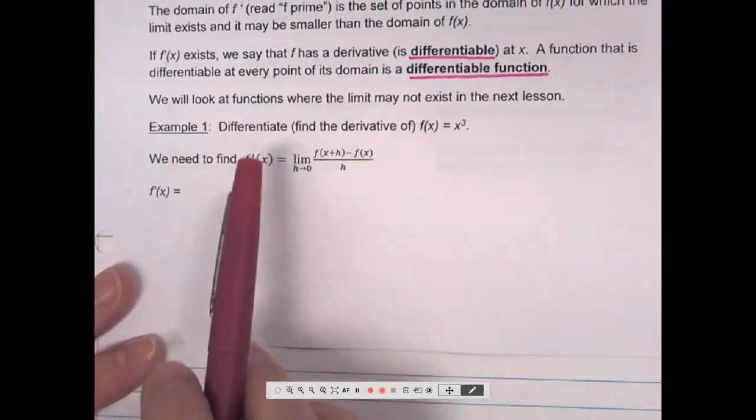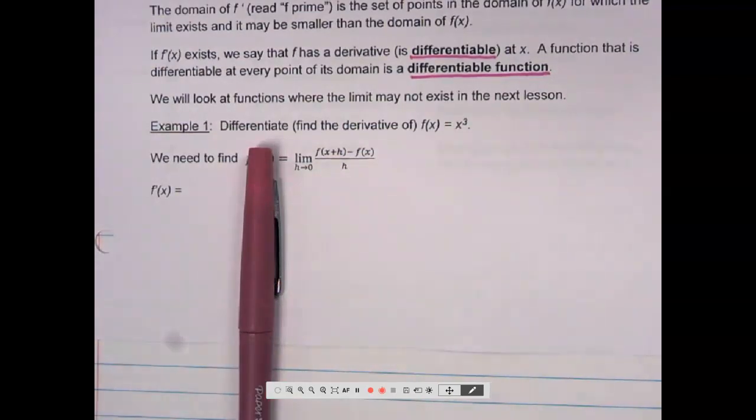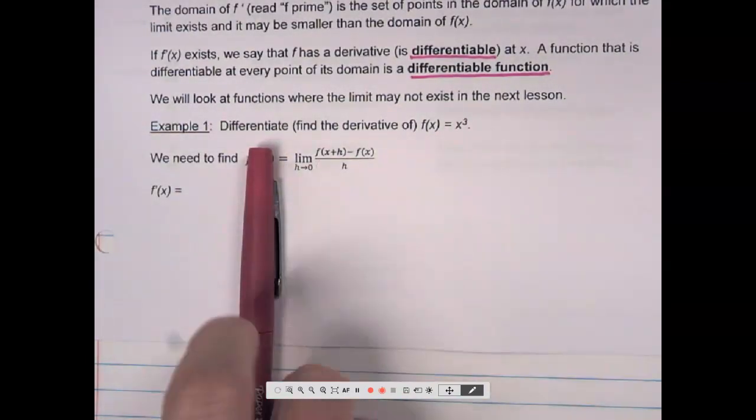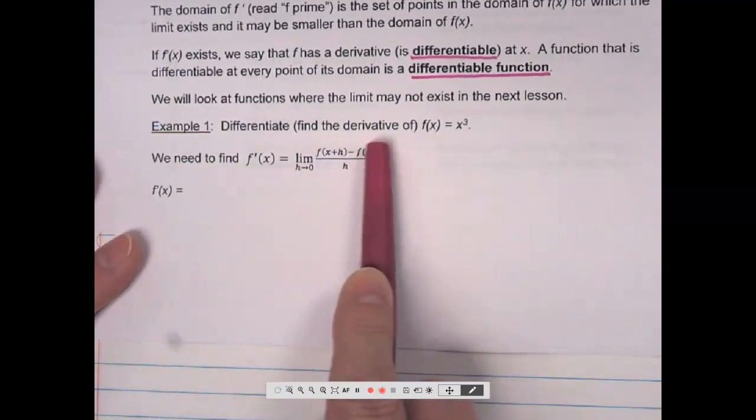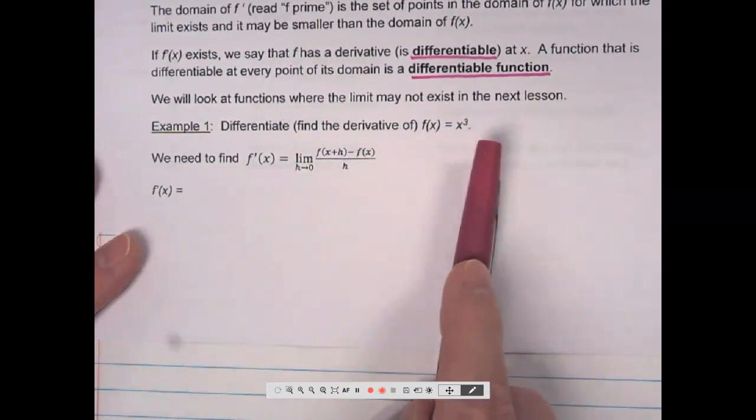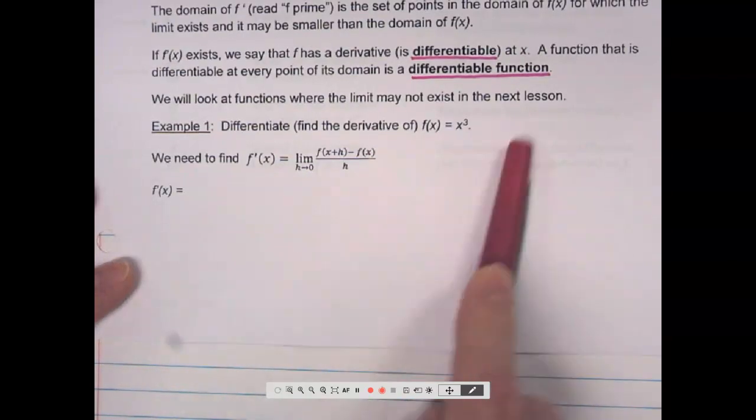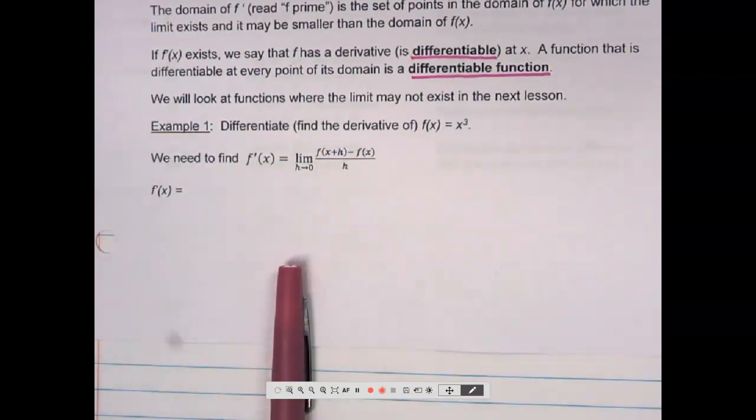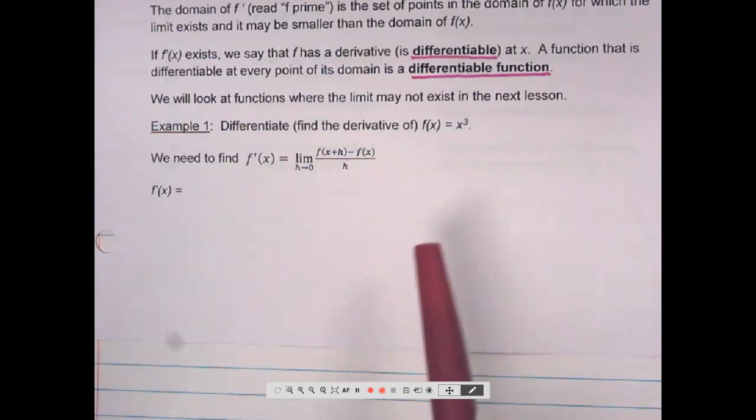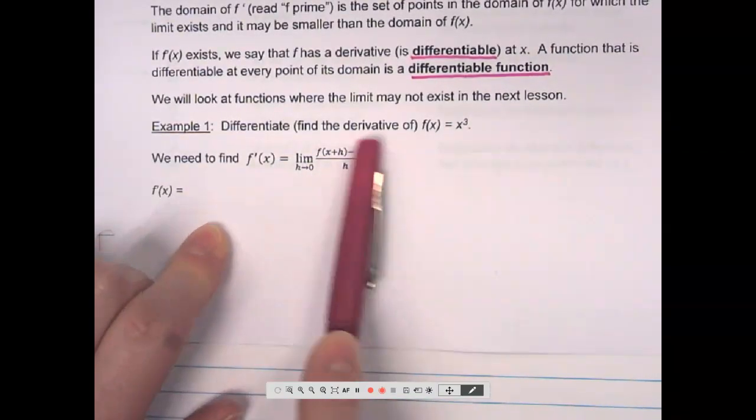Instead of me asking you to find the slope of the tangent or find the instantaneous rate of change or find the slope of the curve, now I might just say differentiate. That all means the same thing. So, differentiate, which means find the derivative of f of x equals x cubed. Notice I'm not giving you a value for x. So, this is going to be a generic formula for the slope at any point.